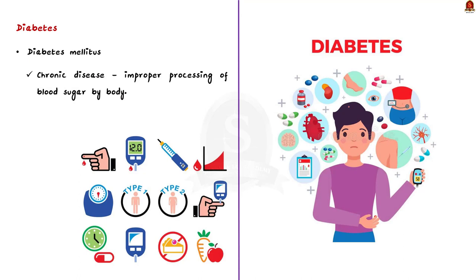Diabetes mellitus, more commonly known as diabetes, is a disease that happens when the body can't process blood sugar, which is also known as glucose.